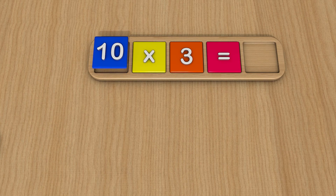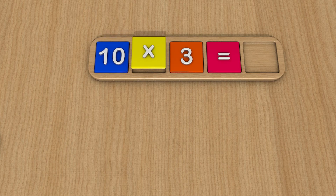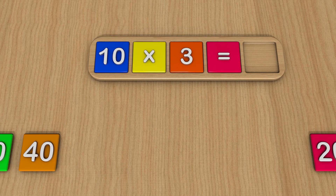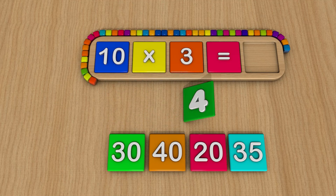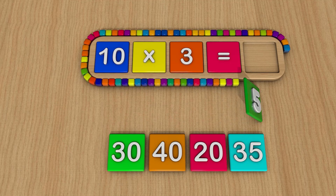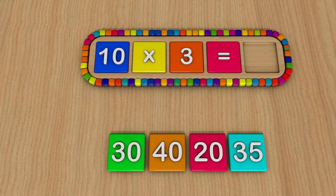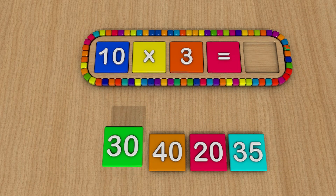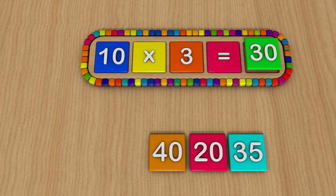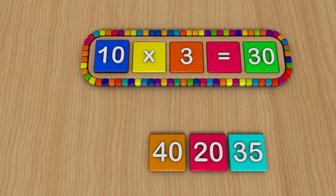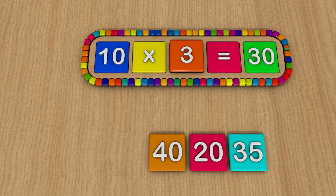10 times 3 equals... 30. 10 times 3 equals 30.